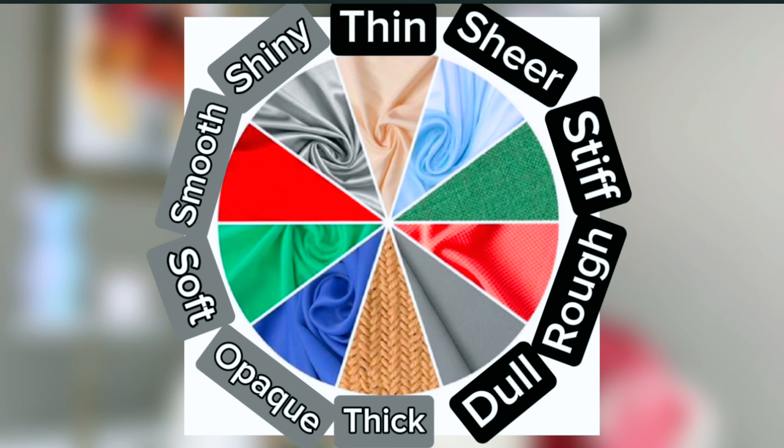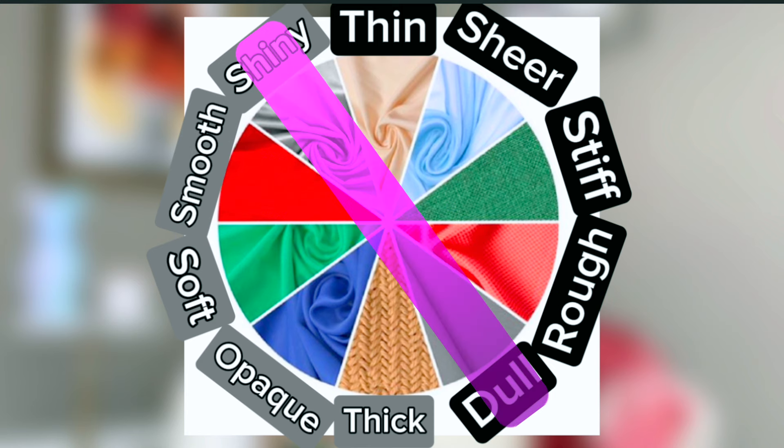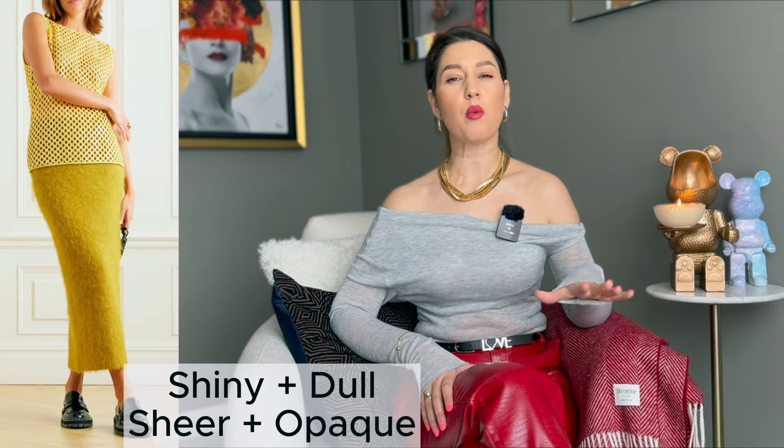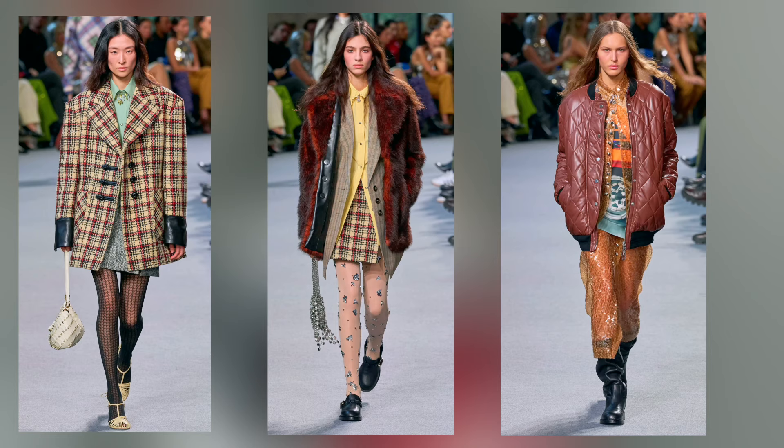If you're new to mixing fabrics and textures, use my wheel of textures. You always choose the opposite — I've put them into different colors, black and gray, so you mix two opposites and they will look perfect together. You can mix either two different opposites or four different opposites. Don't go more than four, because it might become too complicated.